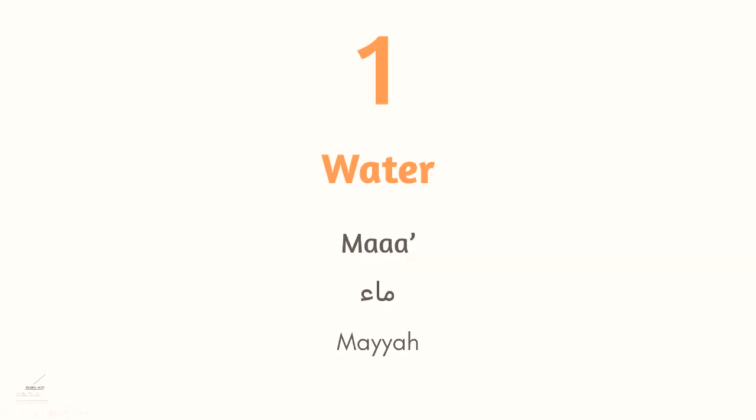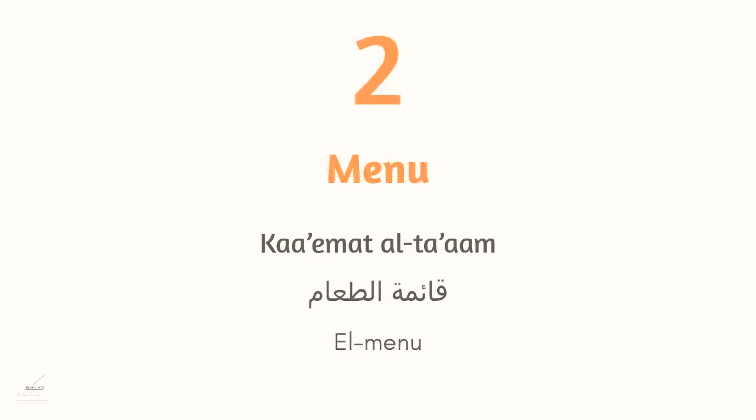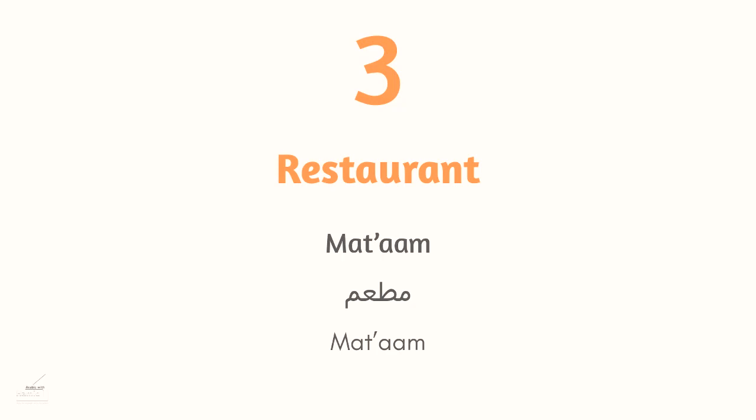We're not finished yet — we'll go through ten important vocabulary words. The first is water: ماء in Modern Standard Arabic and مية in Egyptian Arabic. The second is menu: قائمة الطعام or القائمة in MSA, and المينيو in Egyptian Arabic. The third is restaurant: مطعم, which is the same in both MSA and Egyptian Arabic.